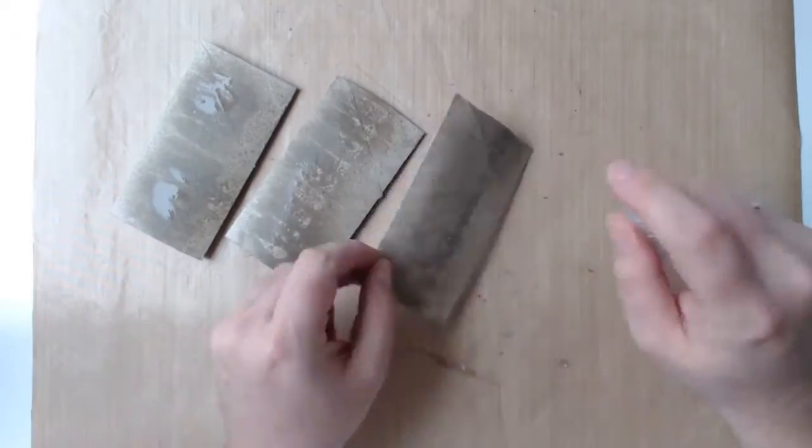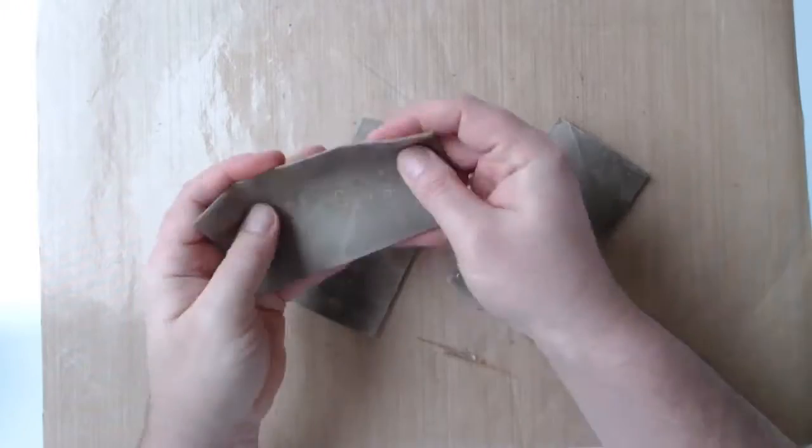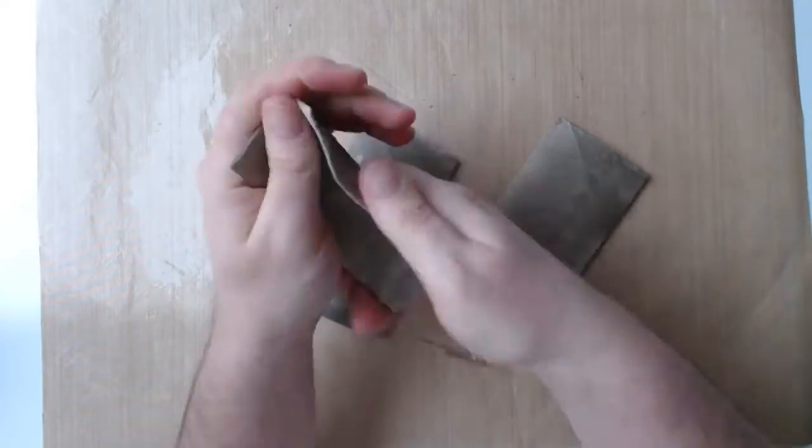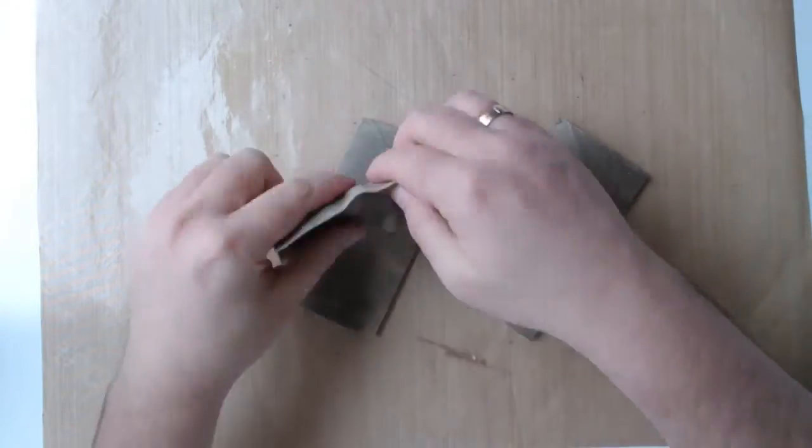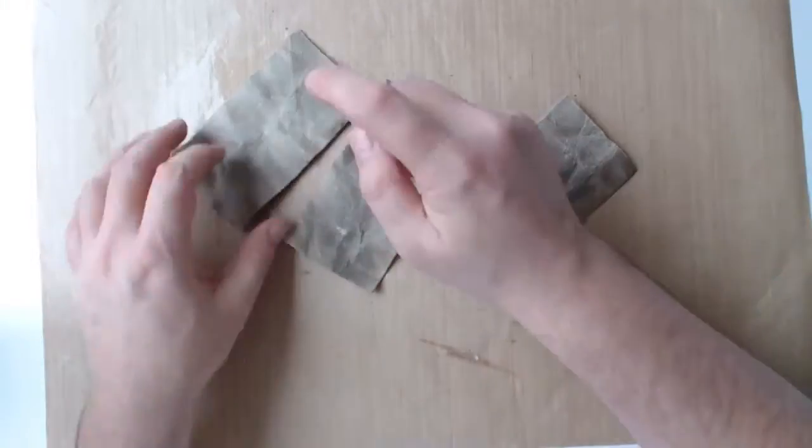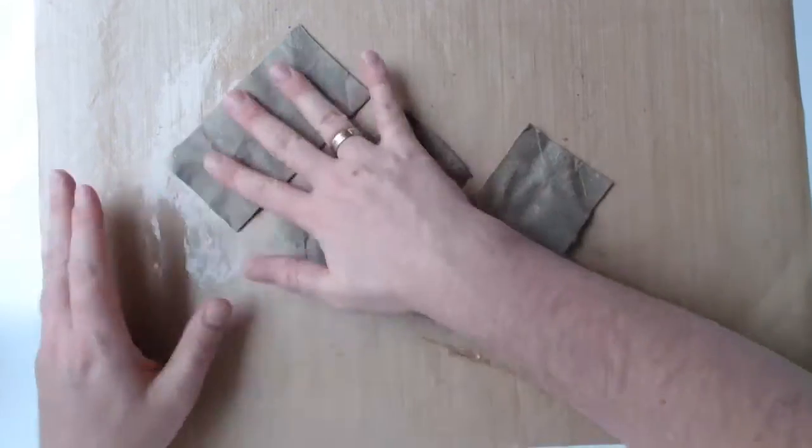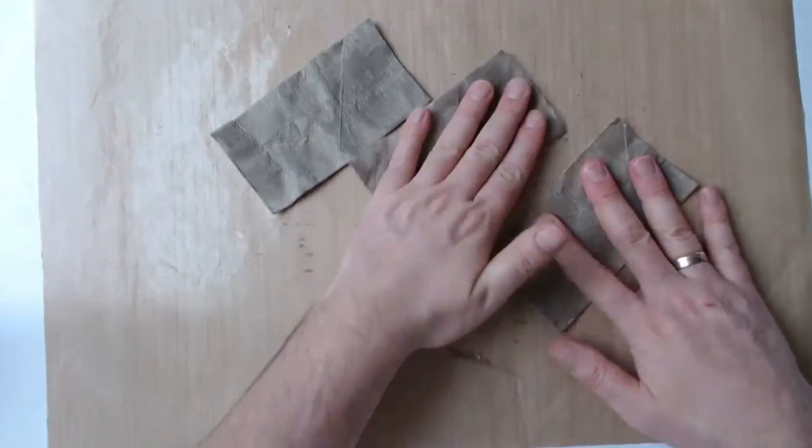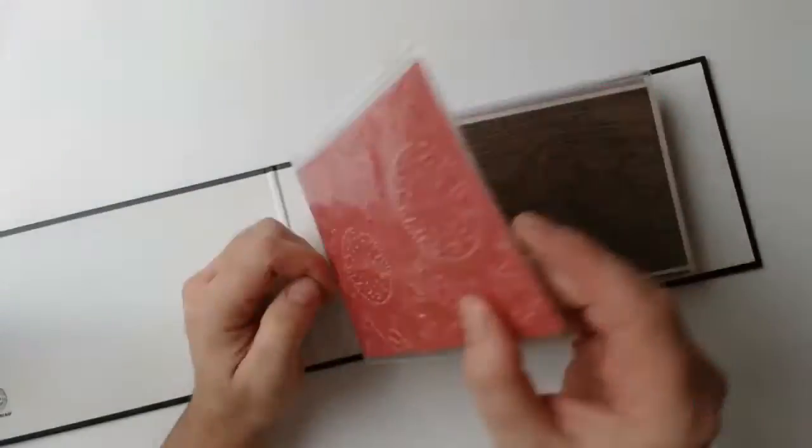I'm spraying the solution onto the flattened rolls with a mini-mister and carefully rubbing it into them. As soon as the pieces are wet enough, I'm crumbling them to break the fibers of the paper. At the same time, the glycerin will wrap around the broken fibers and glue them together again.